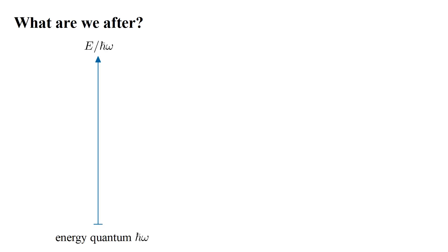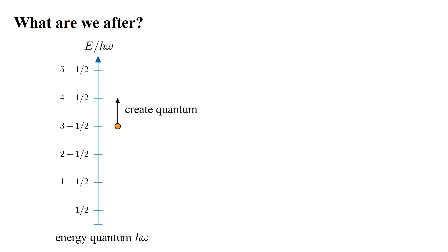Now, let's recall what we're after. We want to find a way to describe the creation and destruction of photons. These are the quanta of the electromagnetic field. We found that the energy quantum of the harmonic oscillator is, in standard units, h-bar omega. And the allowable energy levels, in terms of this quantum, are one-half, one plus one-half, two plus one-half, and in general n plus one-half. Suppose the oscillator is in the n equals three state. If we create a quantum of energy, this will move us to the n equals four state. If we destroy a quantum of energy, this will move us to the n equals two state.